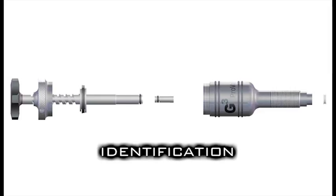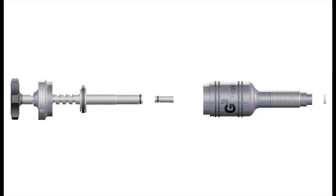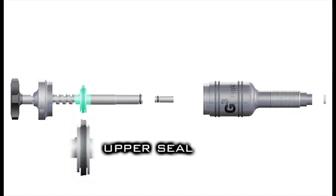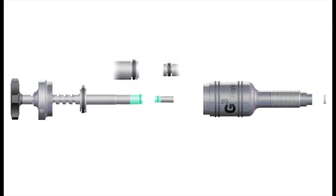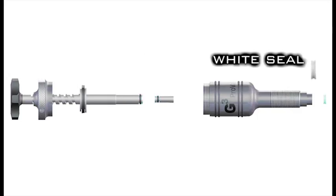Let's begin by identifying the main parts of the G3. The upper seal helps maintain a vacuum and assists in removing air from the injector. The lower seal helps inject resin into the damage, and the piston seal keeps resin isolated. The white seal at the end of the injector seals the injector to the glass.